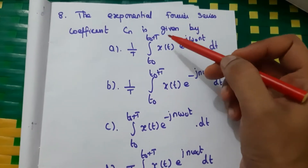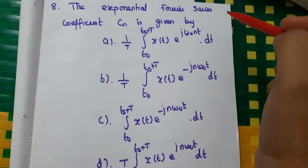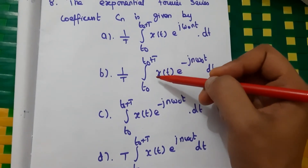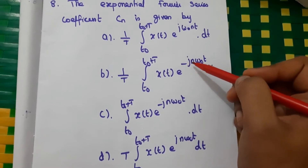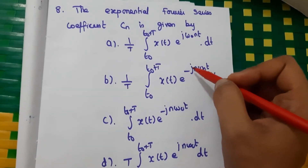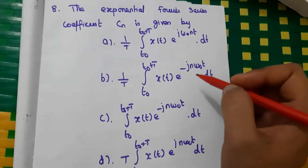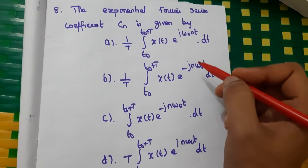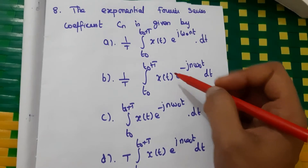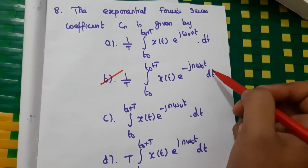Eighth question: the exponential Fourier series coefficient cₙ is given by the formula cₙ = (1/T) ∫[t₀ to t₀+T] x(t) e^(−jnω₀t) dt. Note that in the Fourier series equation we have e^(+jnω₀t), but in calculating the coefficient we have this negative sign. So the answer is B.